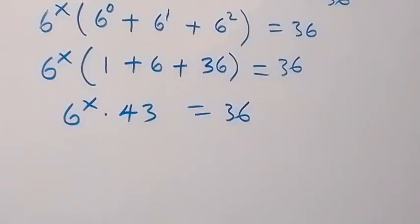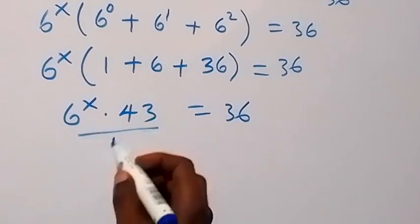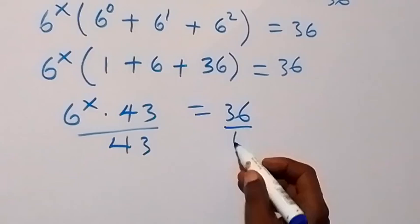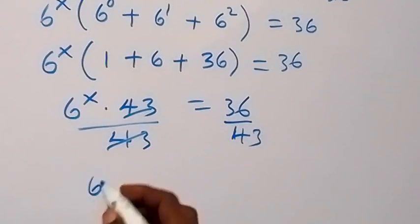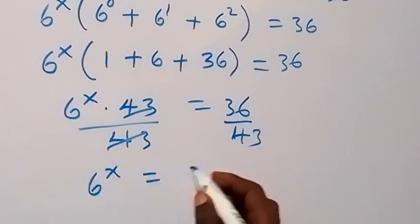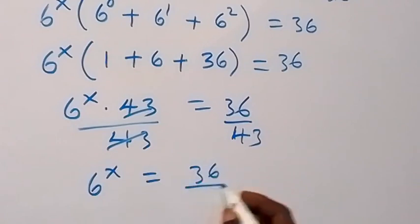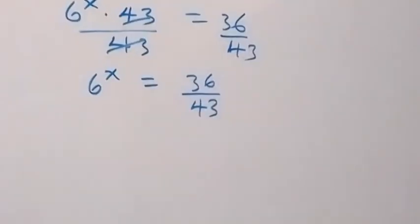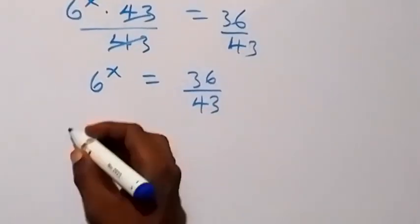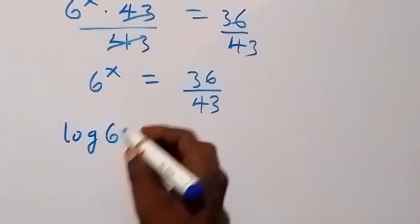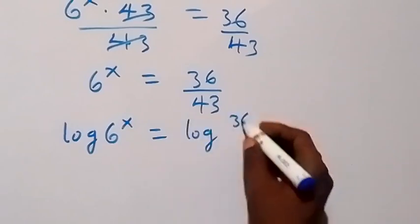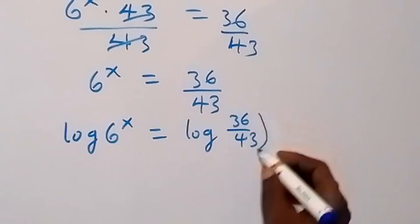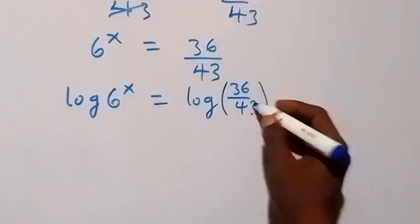Then in the next step we can divide both sides by 43, in order to separate this. The 43 cancels out and we have 6 raised to power x equals 36 over 43. In the next step, when we take the log on both sides, we have log of 6 raised to power x equals log of 36 over 43.